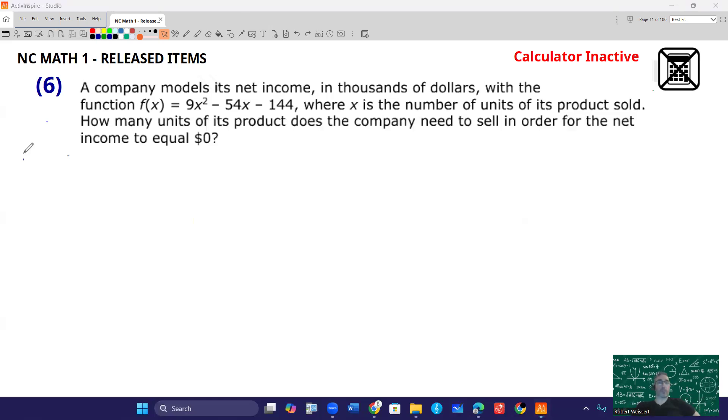So in this problem, it says the net income should equal zero. So right here, your clue is we want this stuff to equal zero. There's a lot of extra fluff, but they want to know the value of x that's going to make that equal to zero.